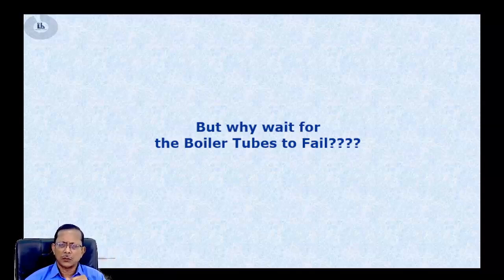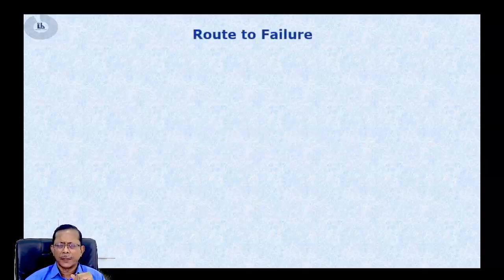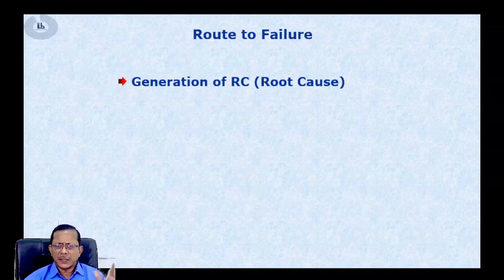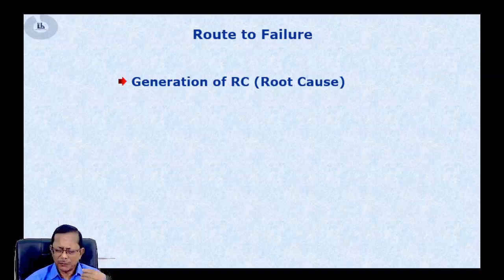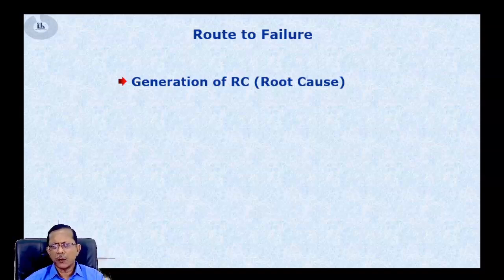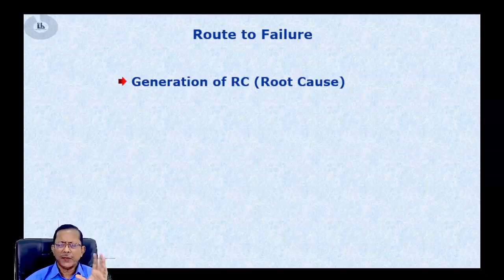From failure to root cause — what are the roots? The root cause is basically a mistake. A mistake that can happen in design — for example, certain superheater coils having more area than desired and picking up more heat. It can happen during erection, and it can definitely happen during operation, where certain operating conditions are not maintained properly, creating a situation that leads to failure.